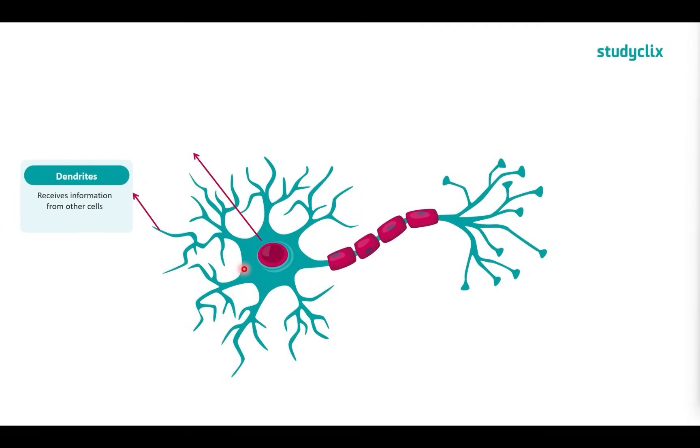Now this is what we call the soma. So this is the cell body which integrates all of the information from the dendrites. Now as you can see we have quite a few dendrites, so there'd be quite a few different connections to different neurons and quite a few different messages. So the soma here helps us to integrate all of this and make one cohesive message to send down the rest of the neuron.